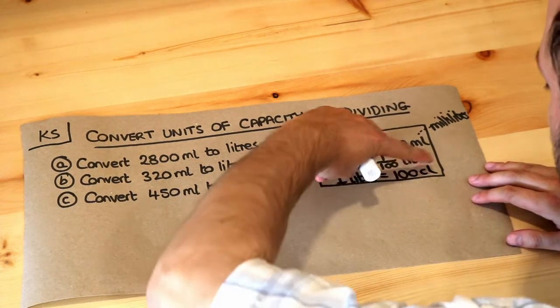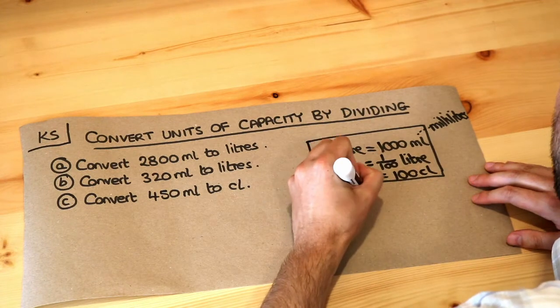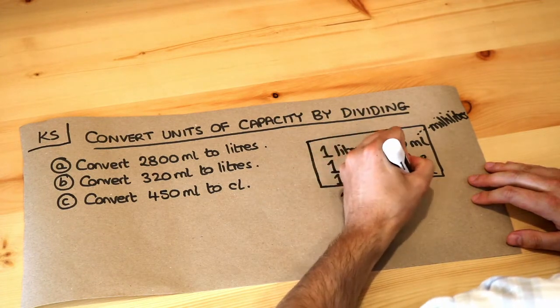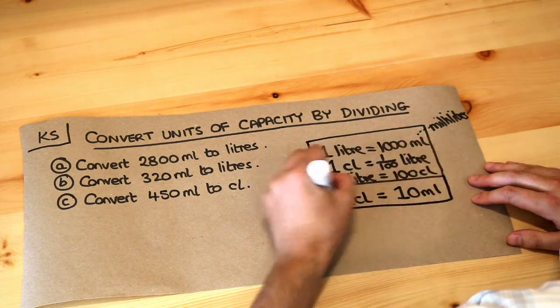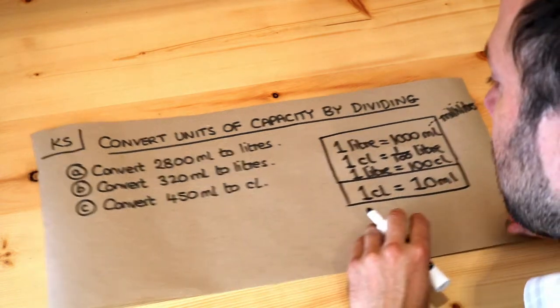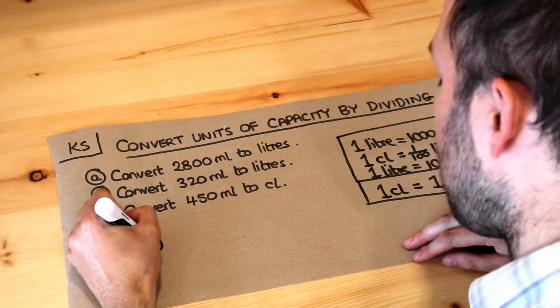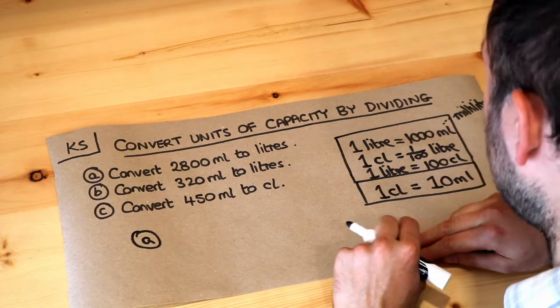And if we combine these two together, that means that one centilitre is equal to ten millilitres. So those are the conversions that we need to know. Let's think about these. Convert 2,800 millilitres to litres.